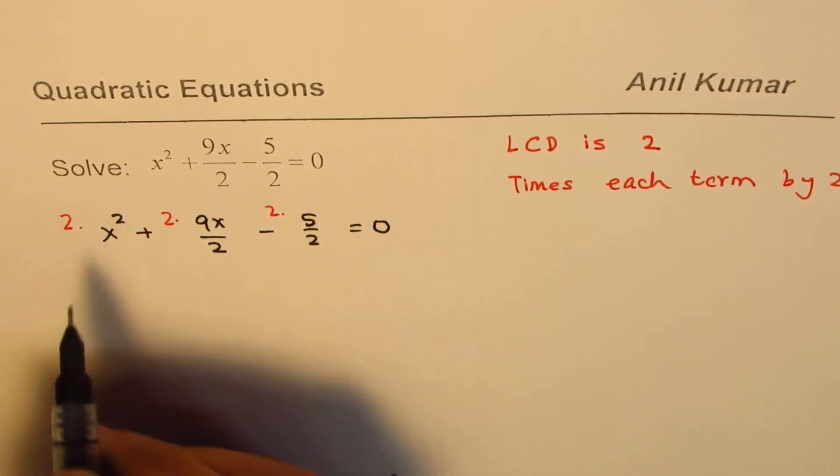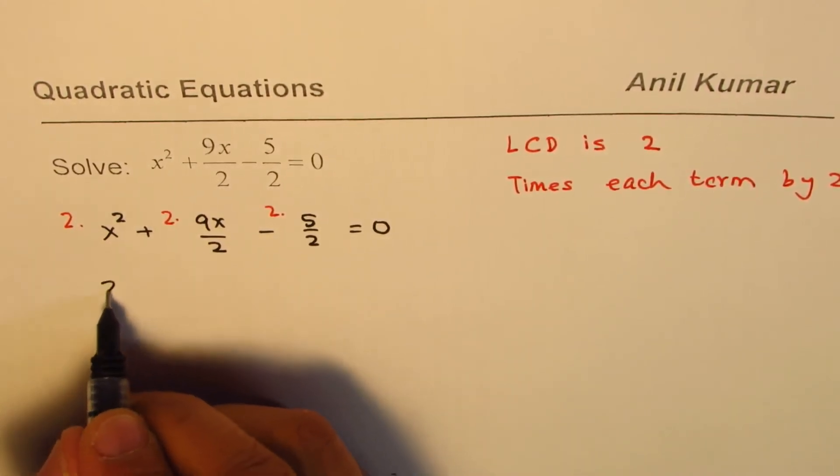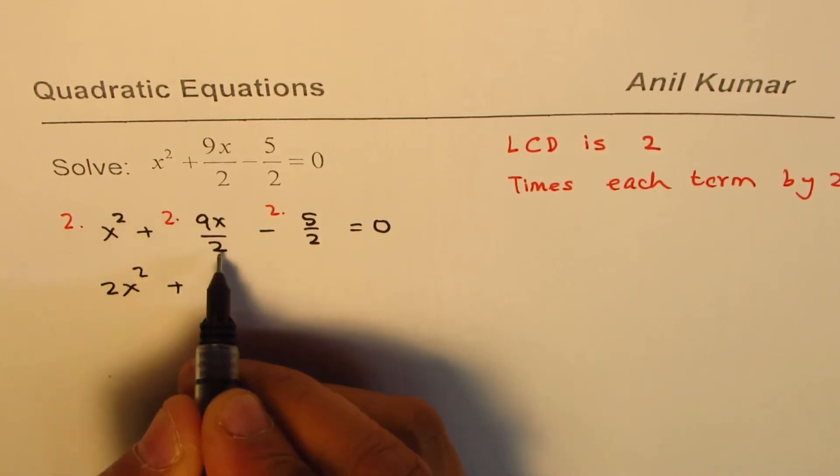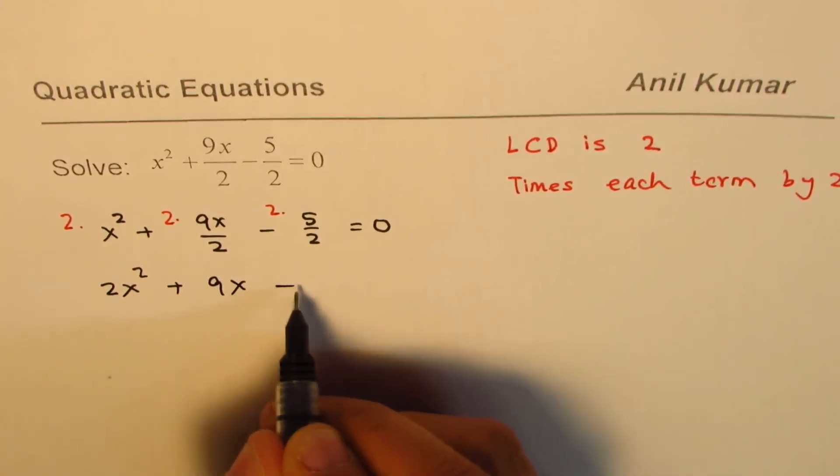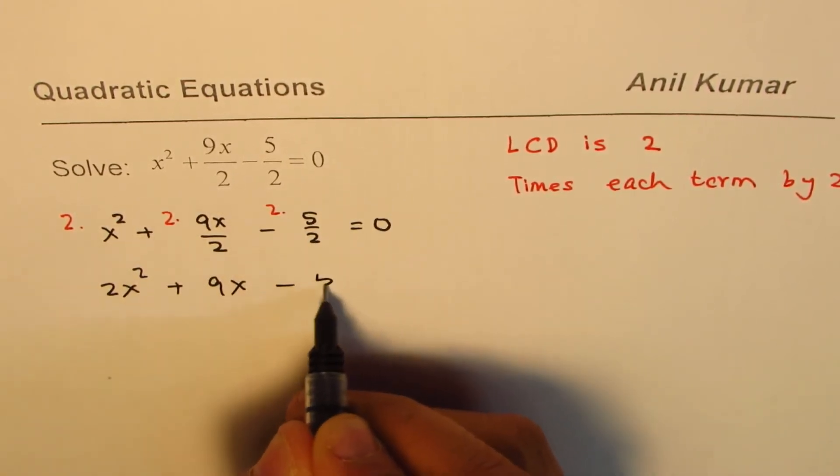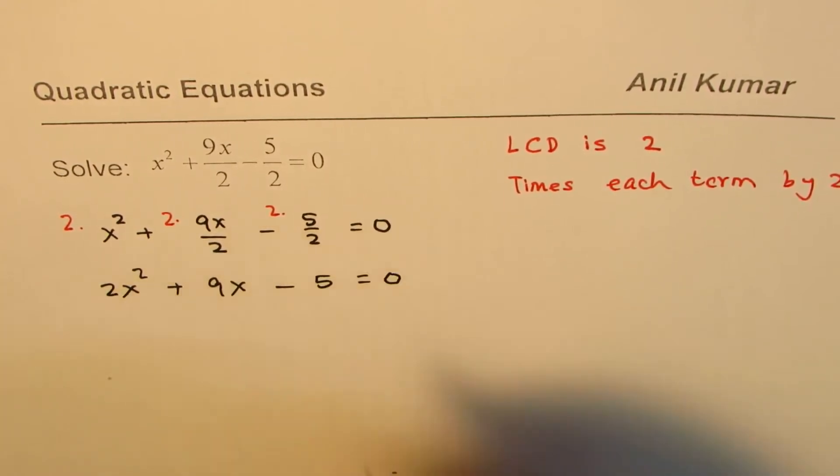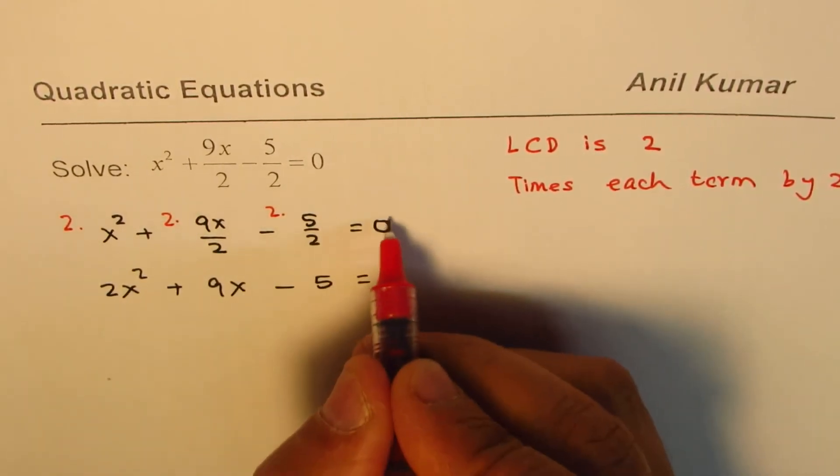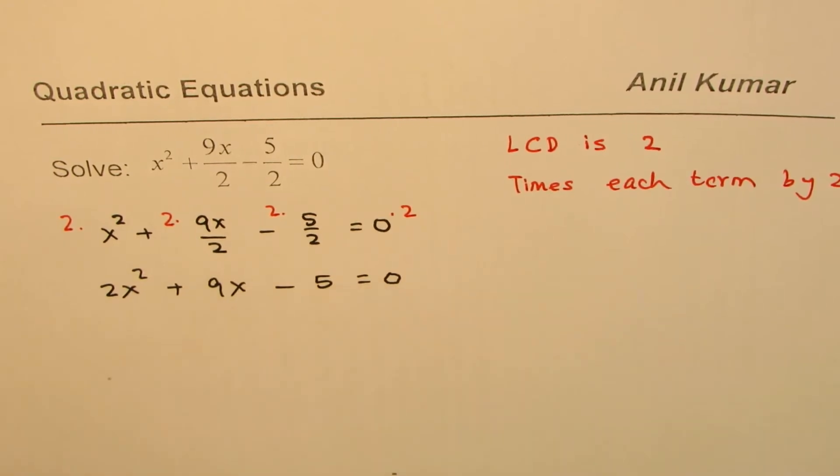When we do that, we get 2x² plus—this 2 and 2 cancel—so we get 9x, minus—this 2 and 2 cancel—so we get 5, equal to 2 times 0, which is 0.